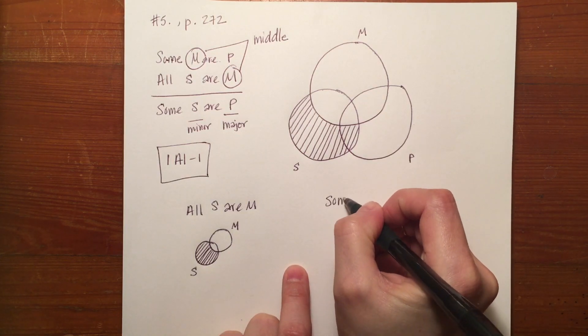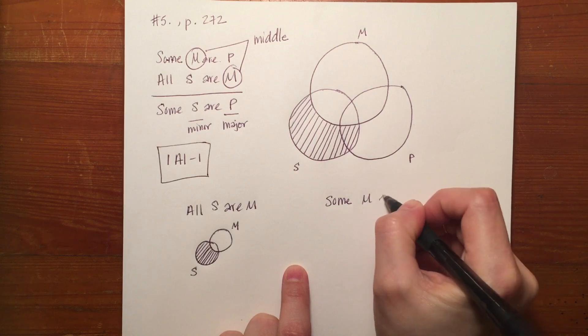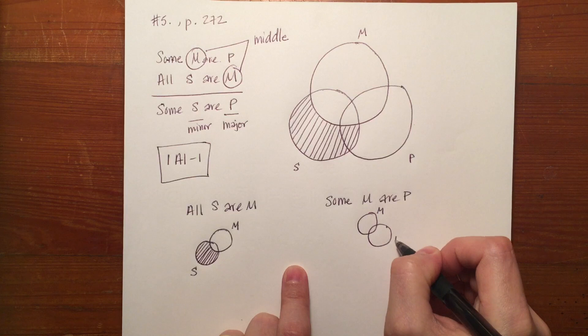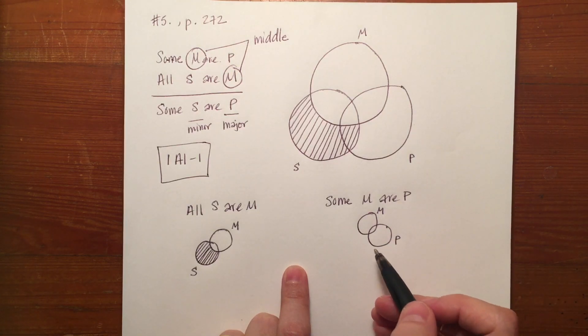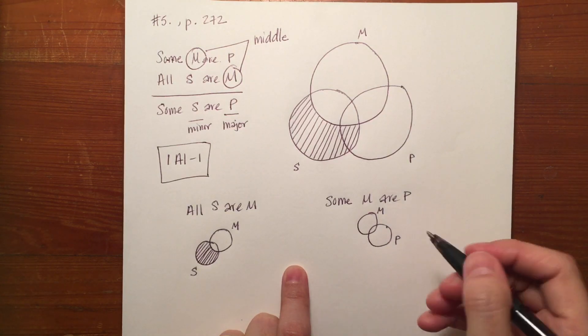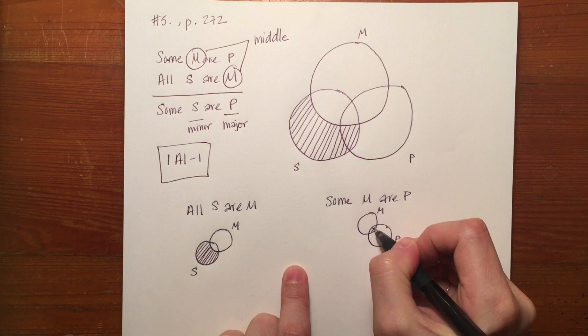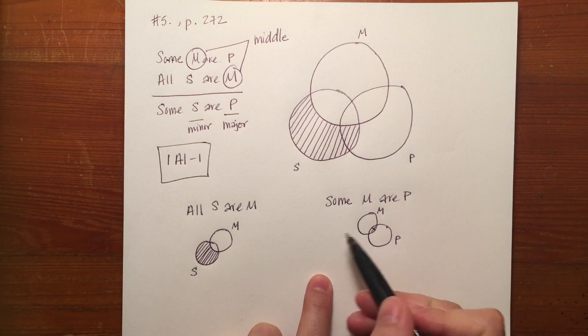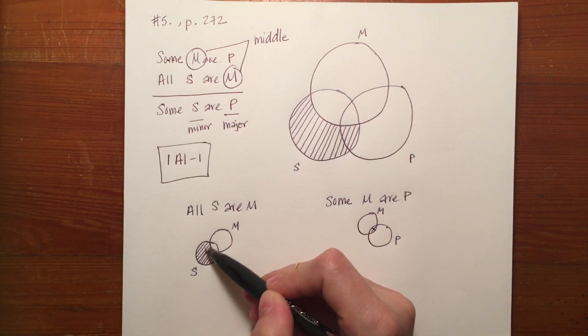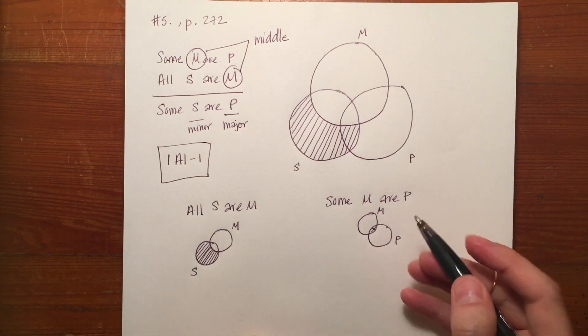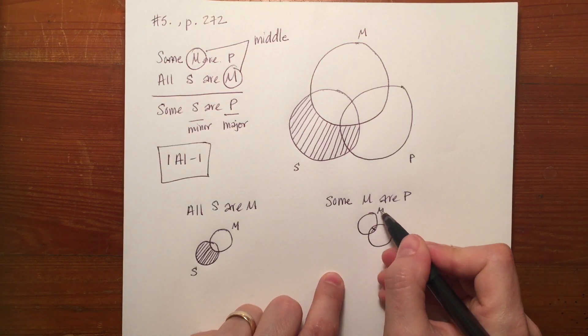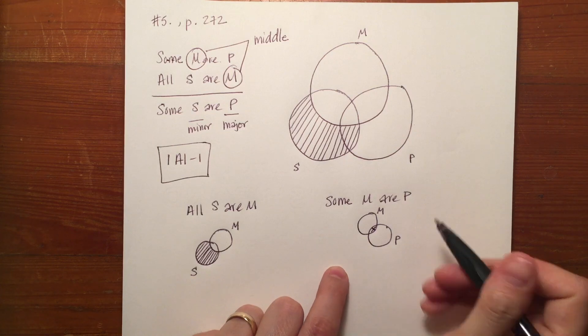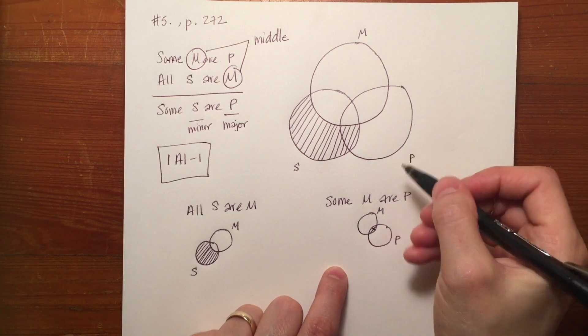Now if we move on to the particular premise Some M are P, then we take a look at M here and we take a look at P here. If we want to say that Some M are P we want to put the x where it is, not like shading which is the opposite. The x goes where it is, the S blots out everything that's not important. So we want to say that some members of M are also in this area that overlapped with the P circle. So our x would go here in this i.